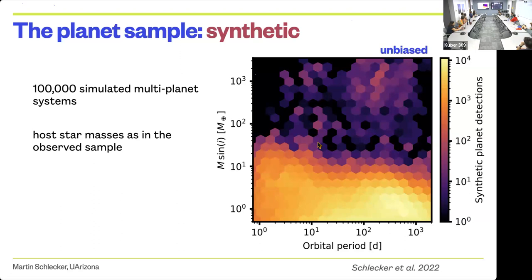Is this already averaged for different stellar masses or for a particular stellar mass? Good point. Here we assume the stellar mass distribution of the combined HARPS and CARMENES surveys, doing the same in the simulations to account for the stellar mass dependency. This is the overall sample. We're going to split this up in stellar mass bins in a minute, because that's where things don't fit anymore.